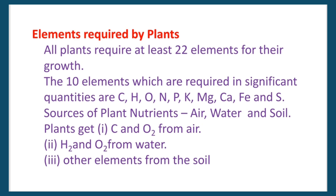We will talk about food production. The 10 elements which are required in significant quantities are C, H, O, N, P, K, Mg, Ca, Fe, and S — that is carbon, hydrogen, oxygen, nitrogen, phosphorus, potassium, magnesium, calcium, iron, and sulfur.